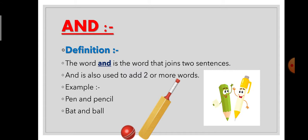AND is also used to add two or more words. If we want to add two or more words, that time also we always use AND. For example, pen and pencil. Pen is a word. Pencil is also a word. And if we want to add these two words, then we always use AND — pen and pencil.